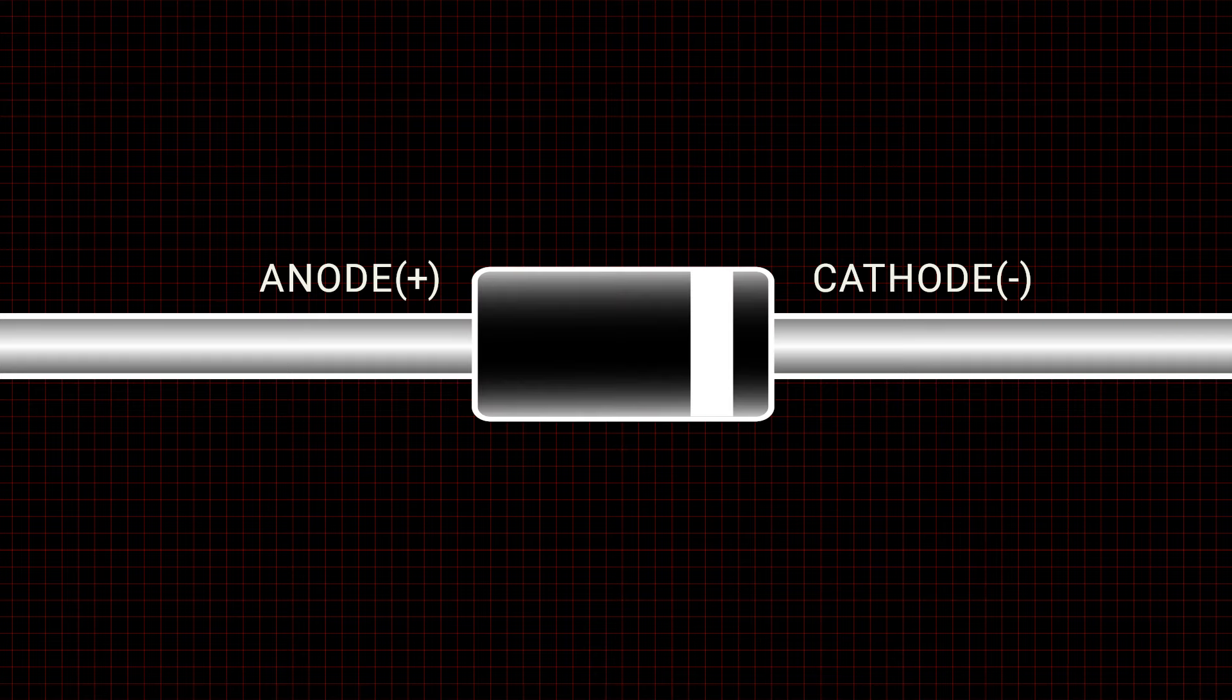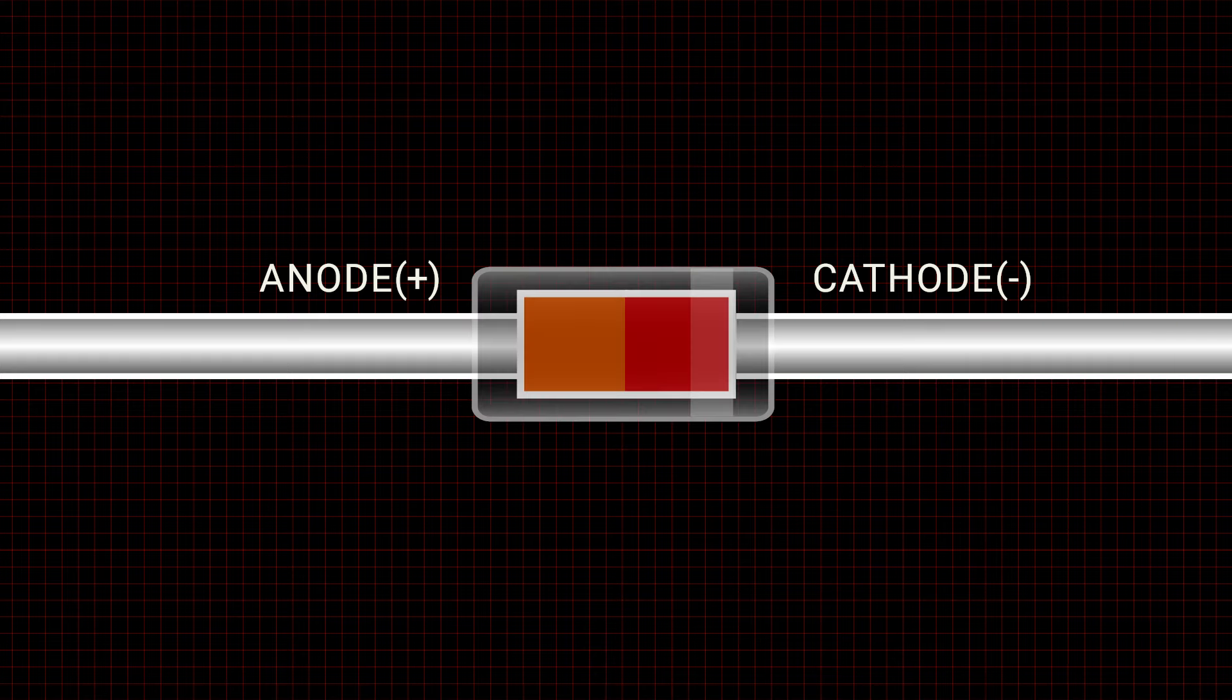Diodes have two terminals, the anode and cathode, that are connected by modified silicon materials and housed in an outer casing. Pure silicon is not a good conductor, so to use it within a diode, it must be doped by adding other materials.